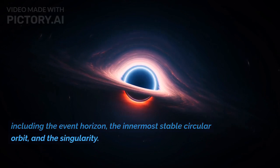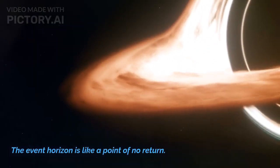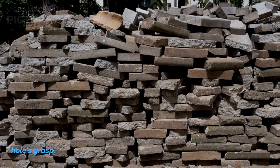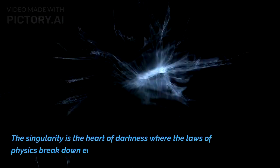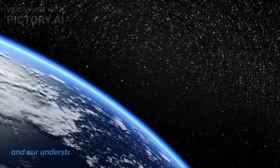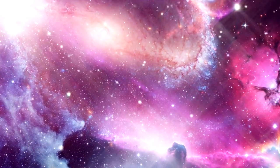Including the event horizon, the innermost stable circular orbit, and the singularity. The event horizon is like a point of no return. Once you cross it, there's absolutely no escaping the black hole's grasp. The singularity is the heart of darkness where the laws of physics break down entirely and our understanding of the universe crumbles. It's a place where time and space lose all meaning.